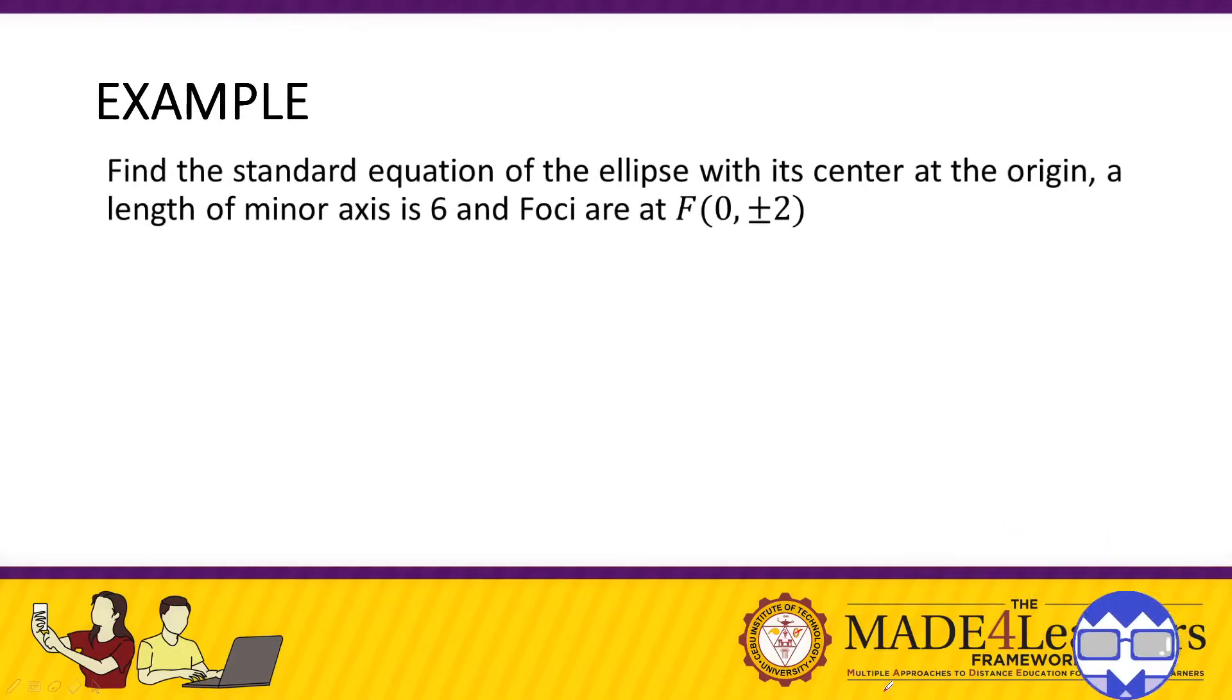Okay, so we have this example: find the standard equation of the ellipse with its center at the origin and a length of minor axis. The length of the minor axis is 6 and the foci are at 0 and positive negative 2.